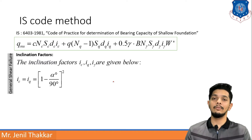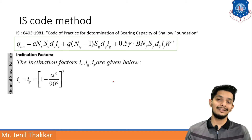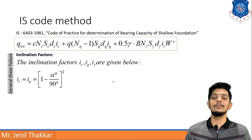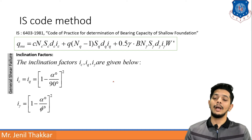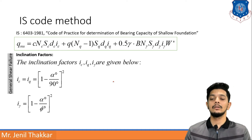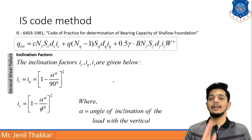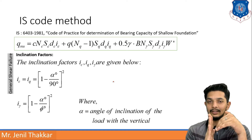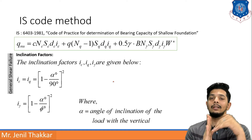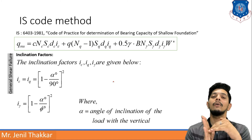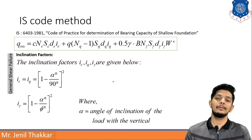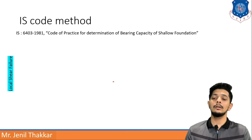For inclination factors, ic and iq are both taken as (1 - α/90)², where α is in degrees. The factor iγ is taken as (1 - α/φ)², where α is the angle of inclination of the applied load with the vertical.